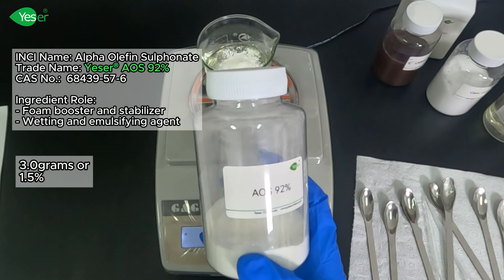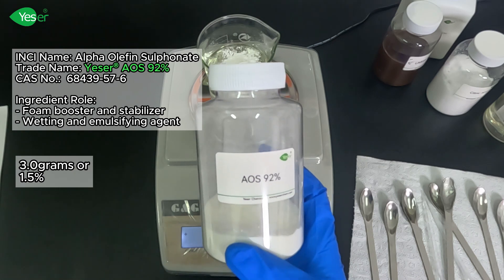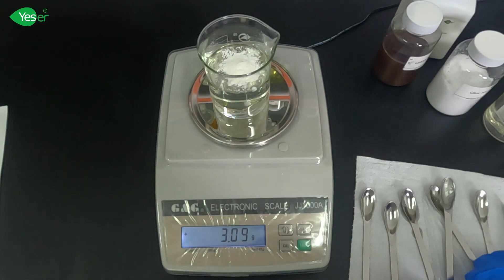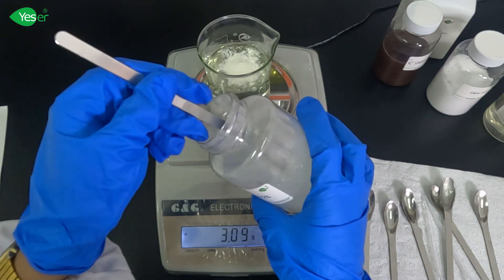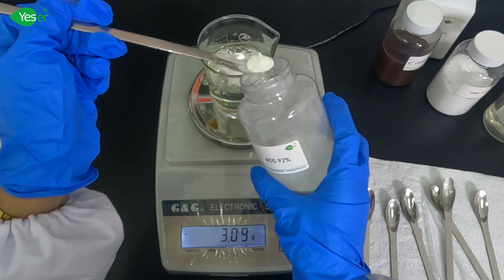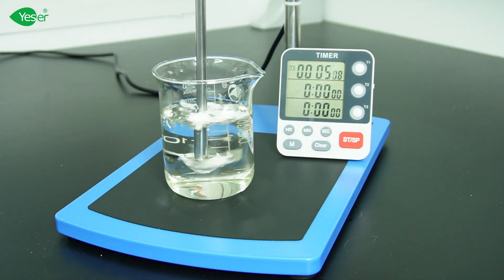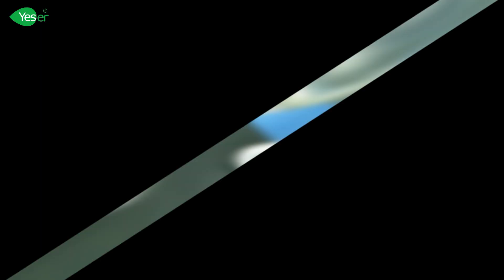Next, we will add alpha-olefin sulfate or AOS, weigh 3 grams of this or 1.5% for the formula. AOS is another surfactant that boosts foam and enhances cleaning efficiency. This works synergistically with SLE-S to produce a thick, luxurious lather.